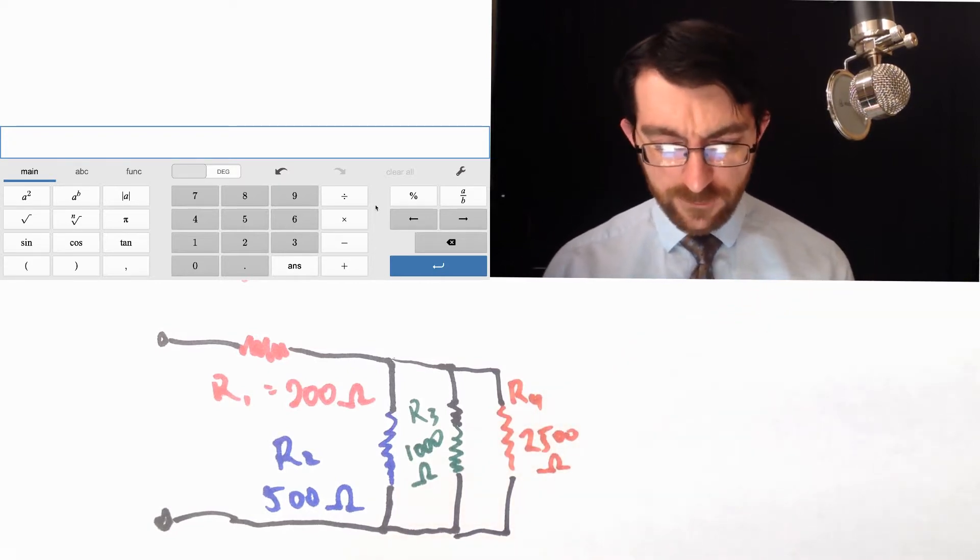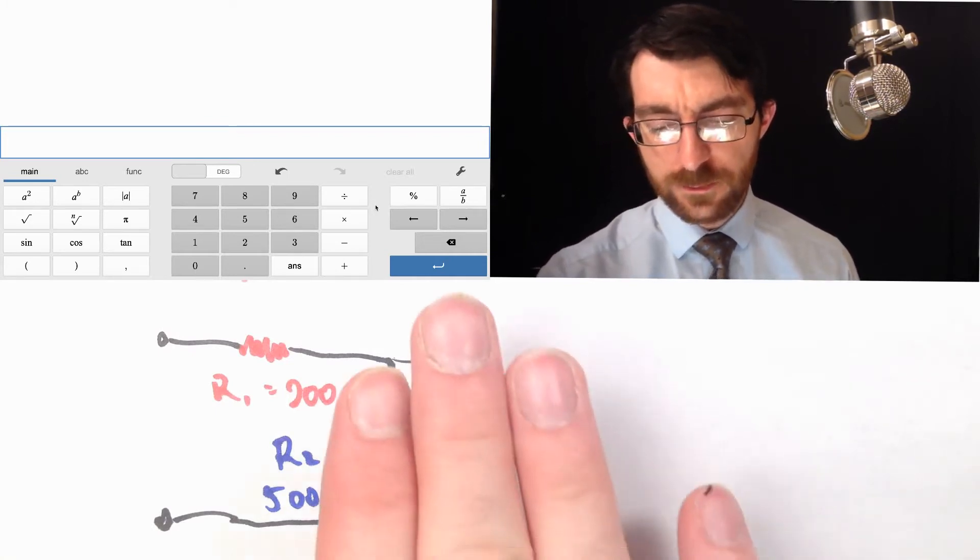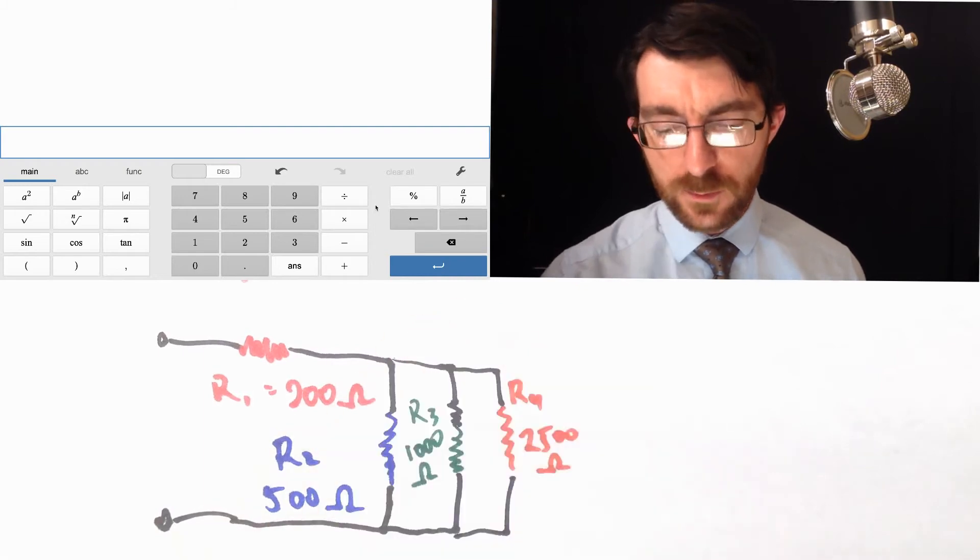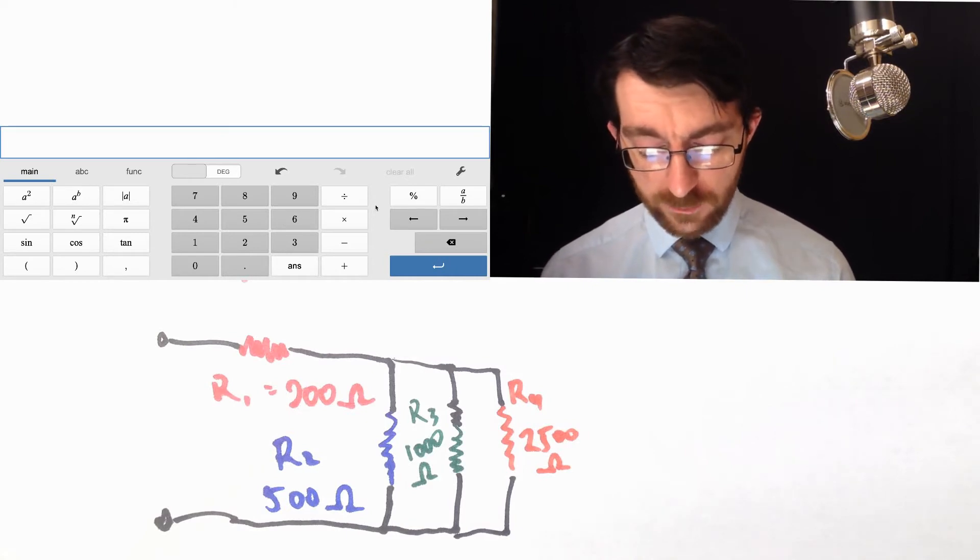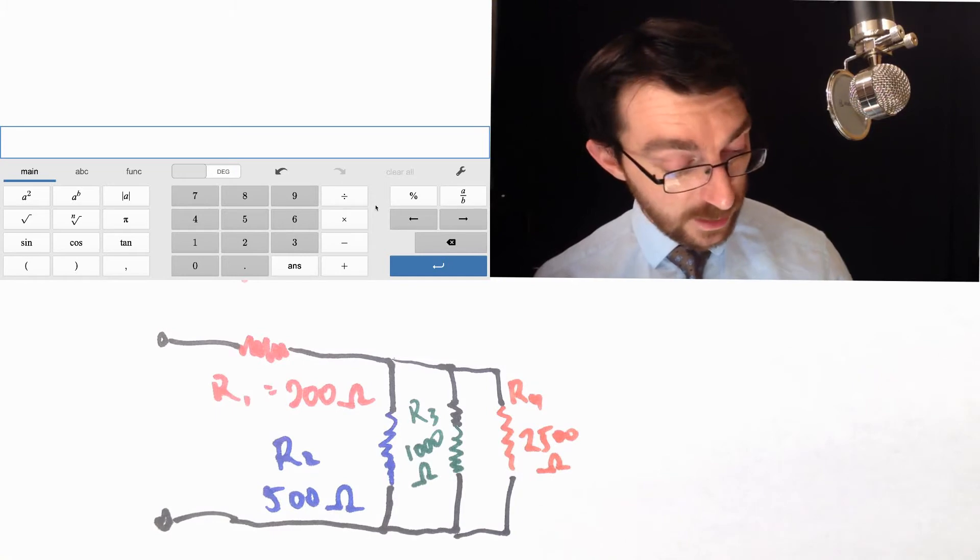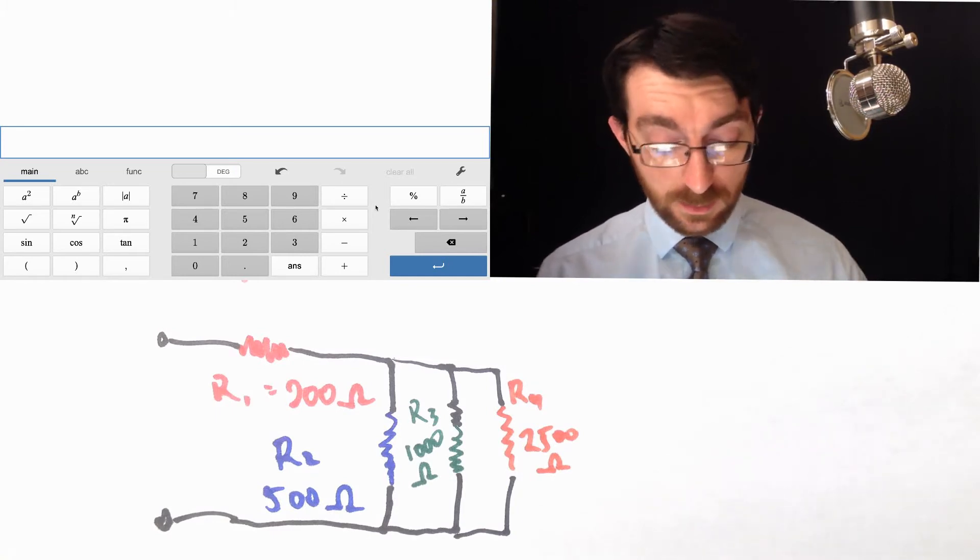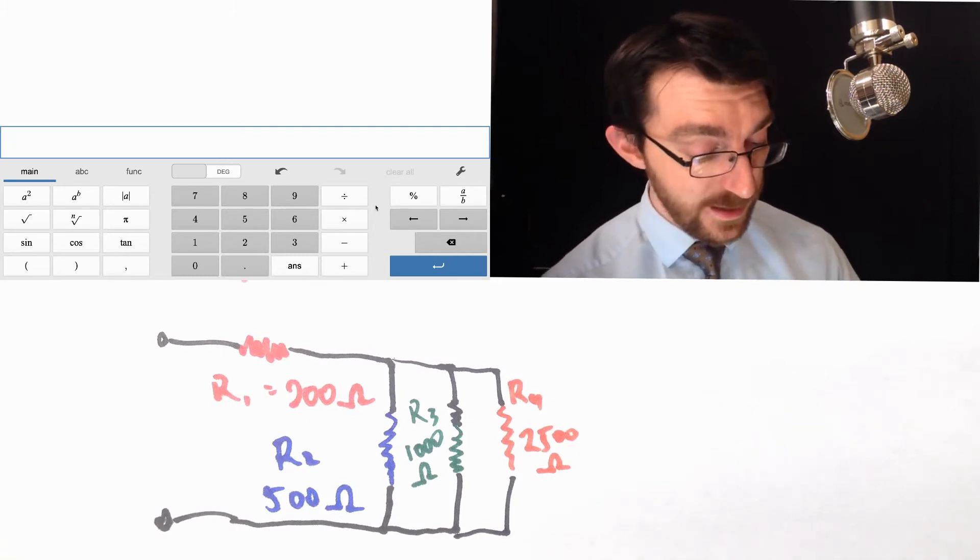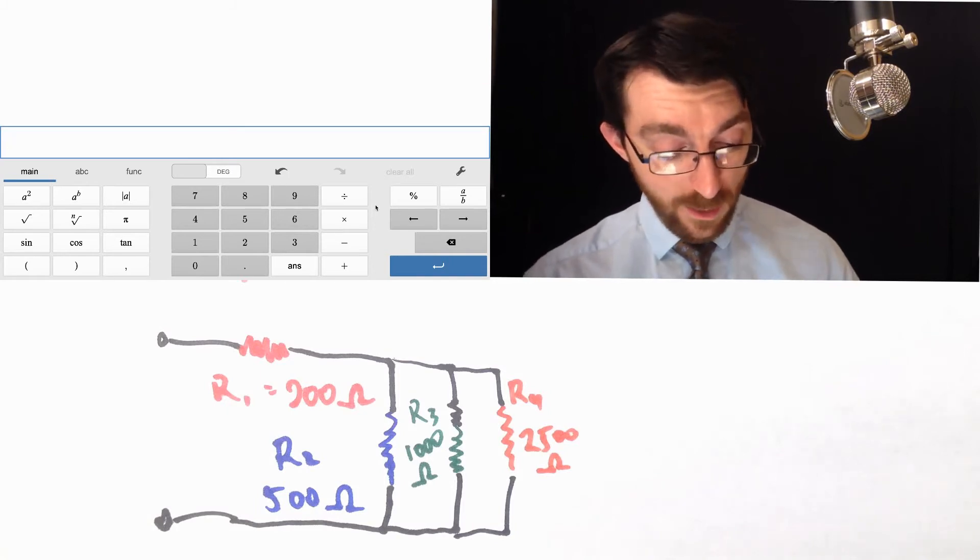So here I've got resistor one, it is in a series with this big group over here and that big group has three resistors in parallel in it. So we need to find the equivalent resistance of those three in parallel and that is going to be that reciprocal equation where the reciprocal of the answer is the sum of the reciprocals of the resistors that are in parallel.